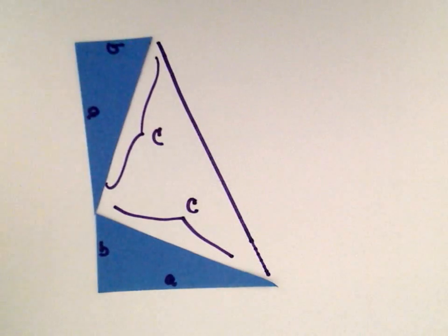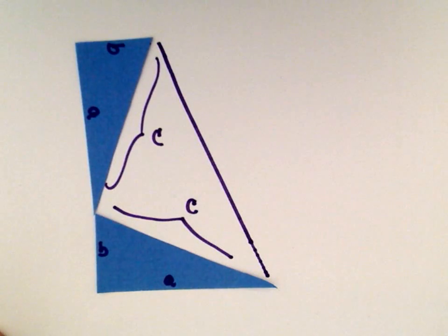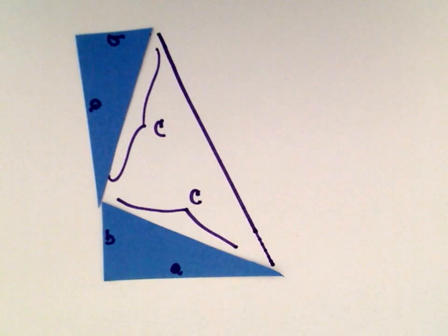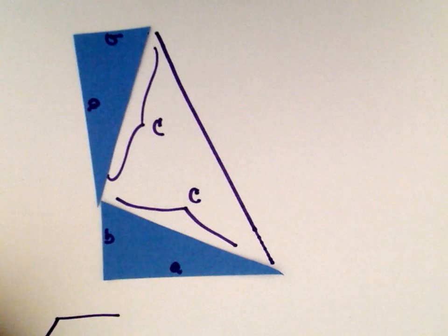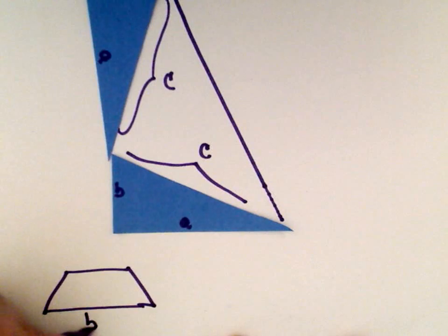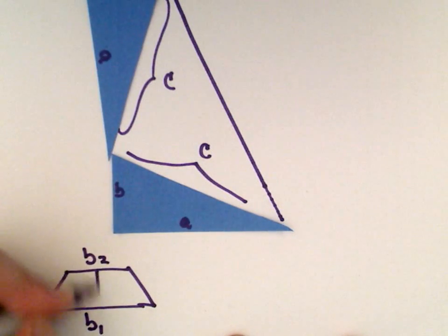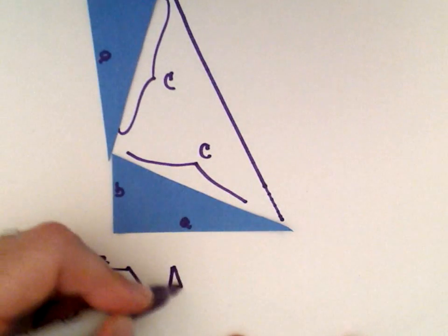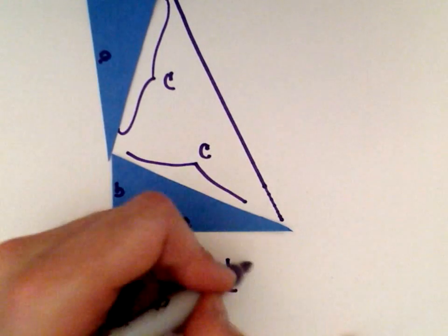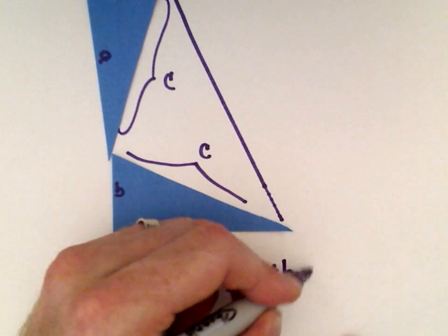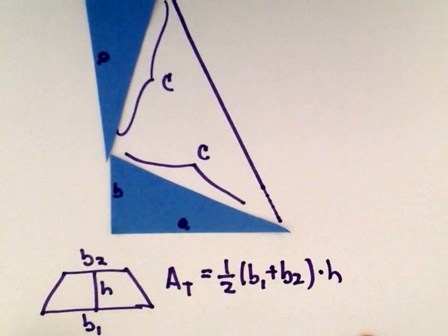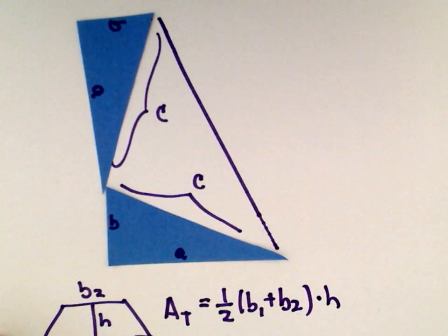He made an observation. If you imagine this trapezoid, you're going to have a trapezoid. Recall the area of a trapezoid. Let's suppose it has a base B1, a base B2, and it has a height of H. The area of a trapezoid, we take one half, we take base 1 plus base 2, add those together and divide by 2. You're taking an average width. Then you multiply that by the height.